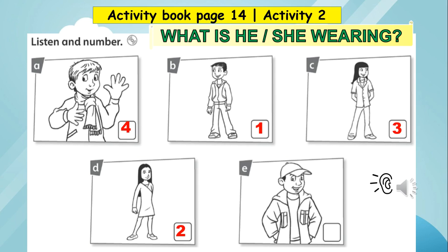Number five: he's wearing a gray coat and a blue cap. Good job everybody. Now what we have to do is color — you have to complete the coloring on your own. Number one: green tracksuit and red trainers.